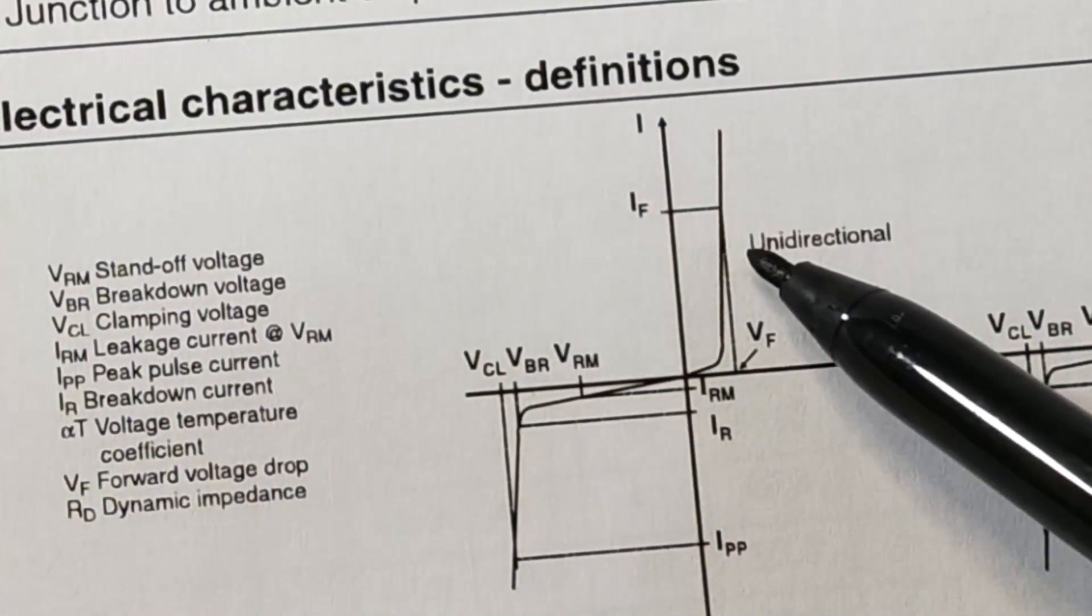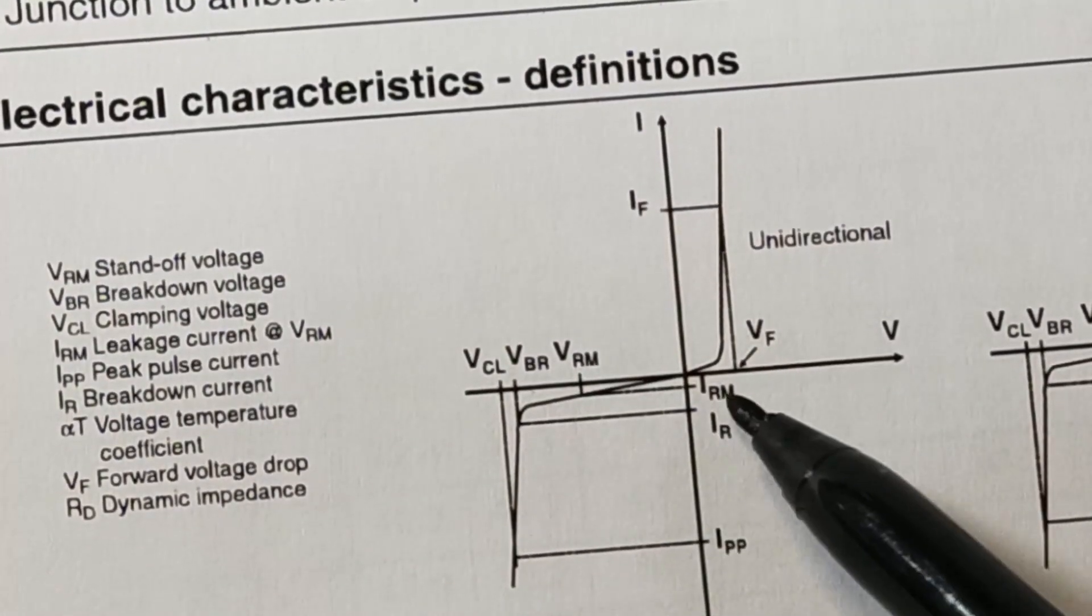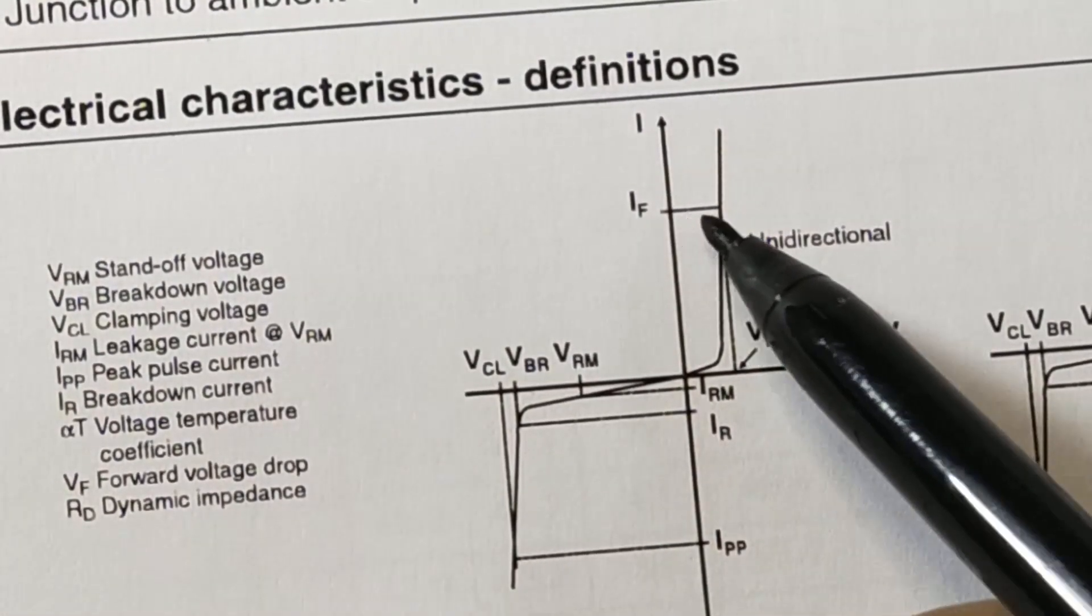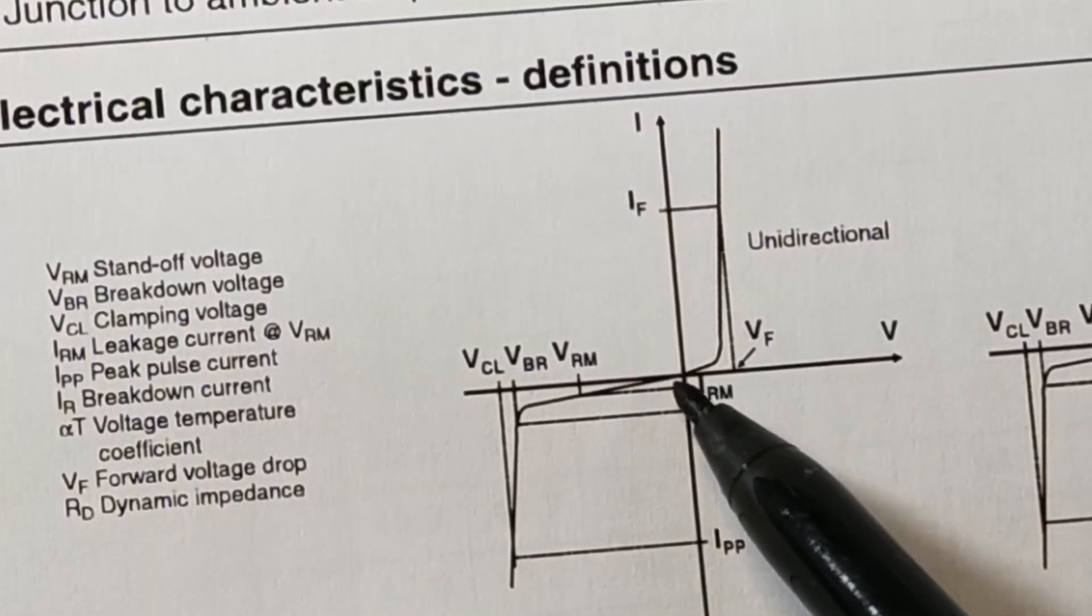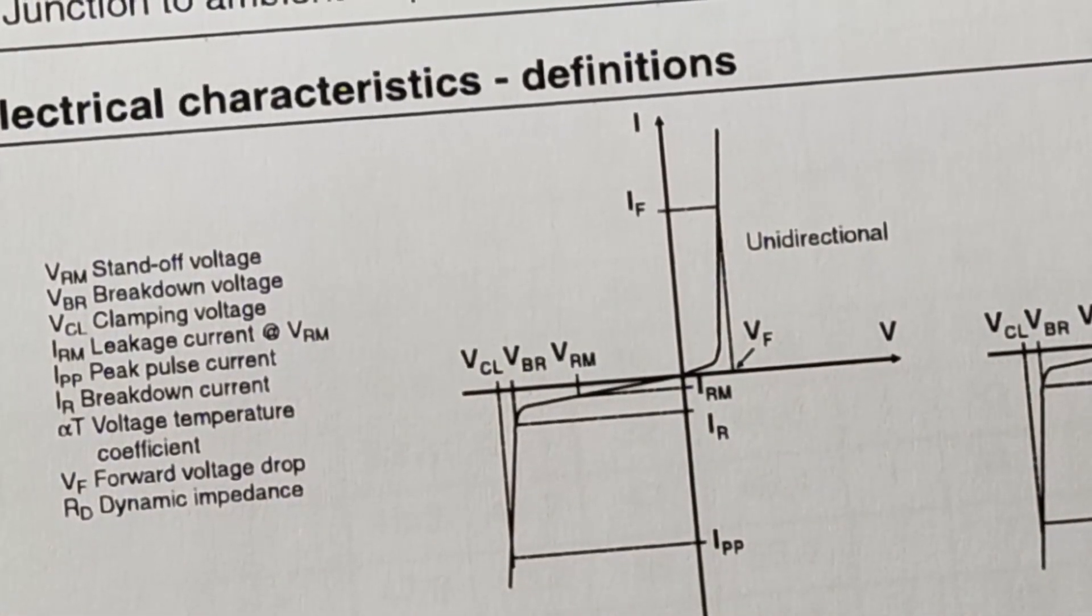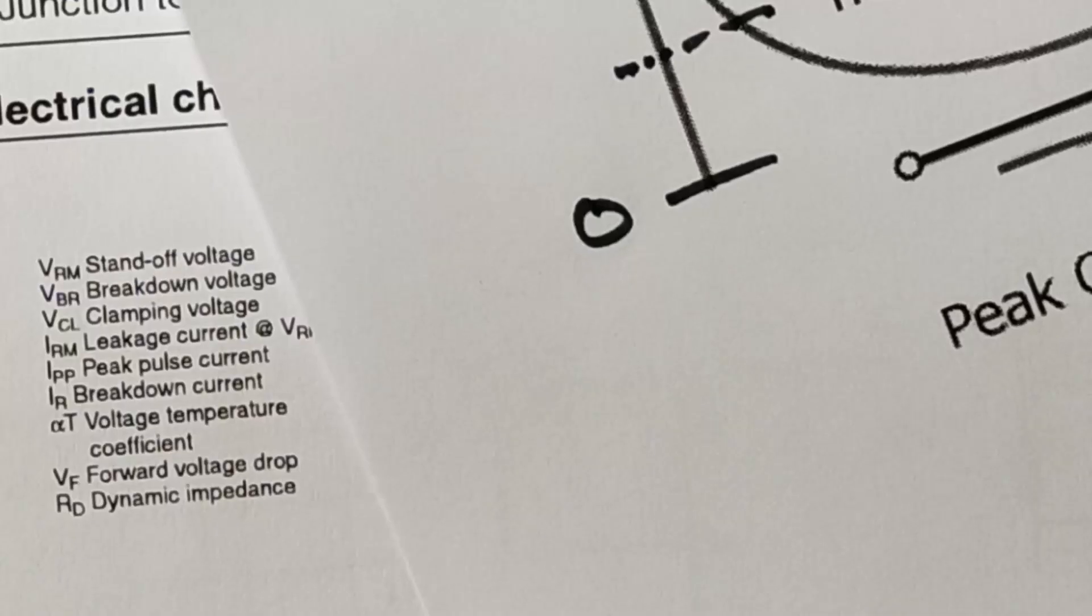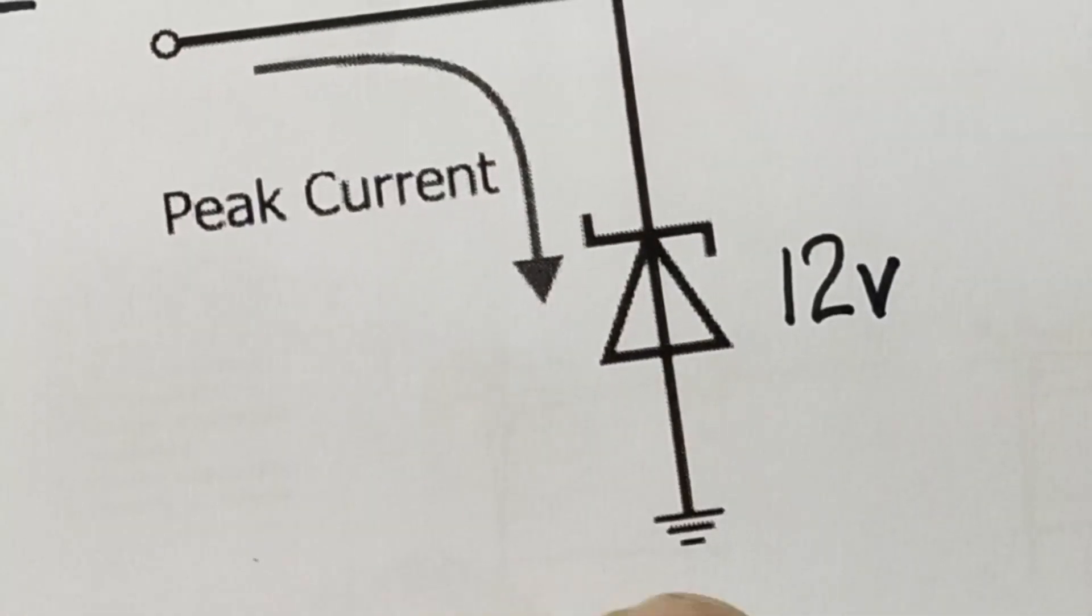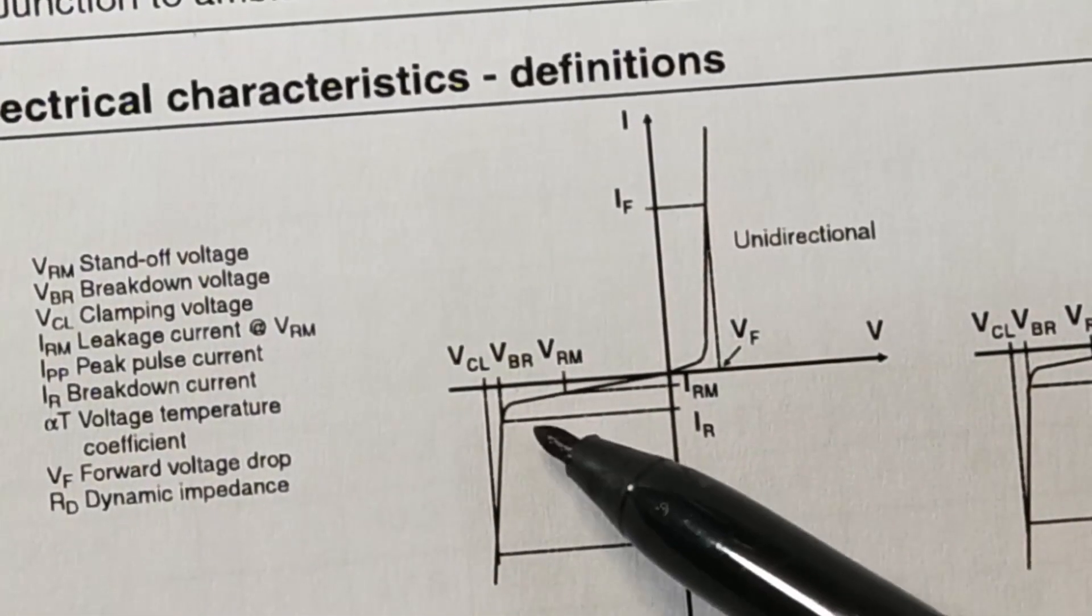In forward condition it will work like a simple diode. It has a forward voltage, it has a forward current. But in reverse voltage, in reverse condition, as we connected here positive and ground, in that condition...